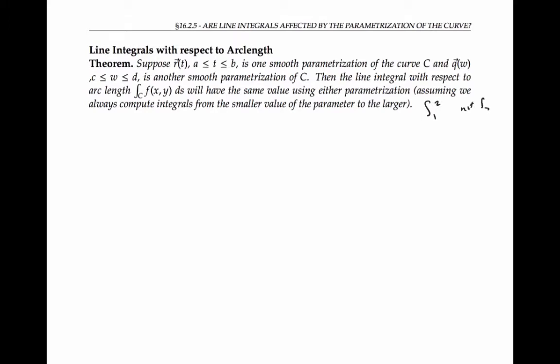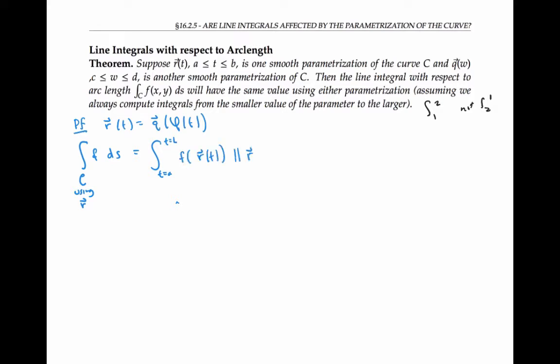First, let's tackle line integrals with respect to arc length. Suppose that r(t) is one parameterization of curve C and q(w) is another. Then the line integral with respect to arc length will have the same value using either parameterization, assuming we always compute integrals from the smaller value of the parameter to the larger. To prove that parameterization doesn't matter, we'll use the reparameterization formula r(t) = q(φ(t)). By definition, the line integral using r is the integral from t = a to t = b of f(r(t)) times the norm of r′(t) dt.